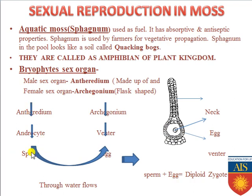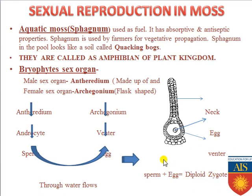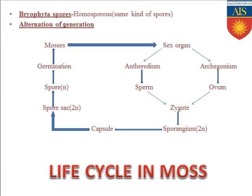The sperm produced from the antheridium passes through water and reaches the egg. After fertilization, the sperm and egg form the diploid zygote. These are the overall sex organs present in bryophytes.